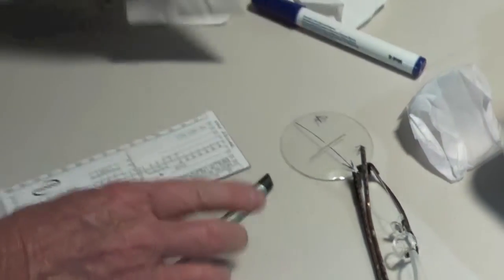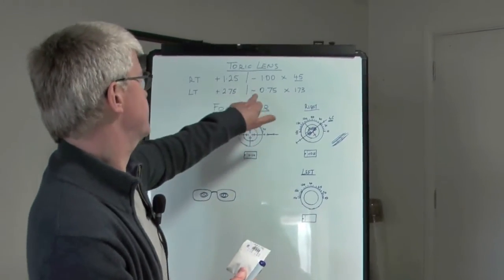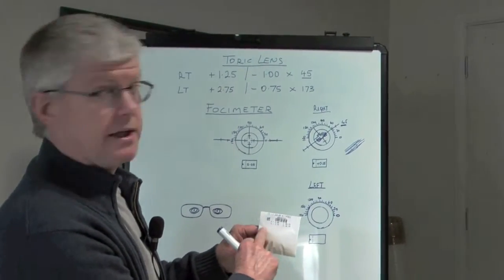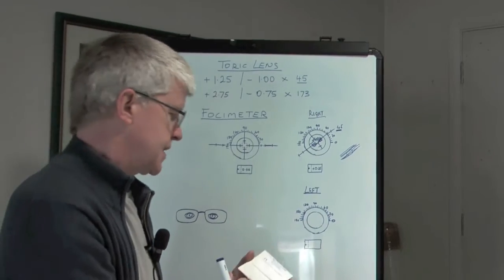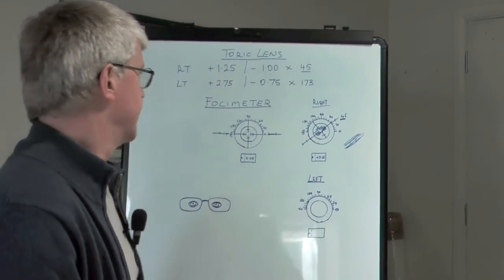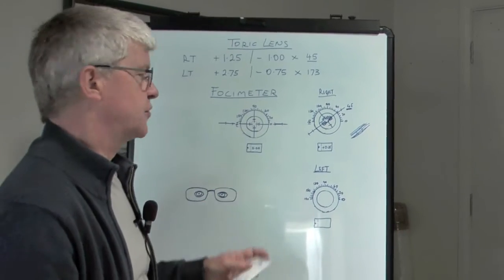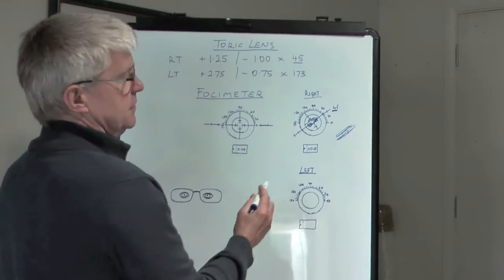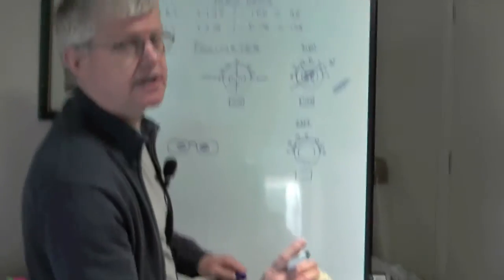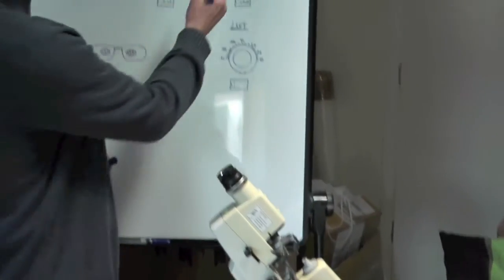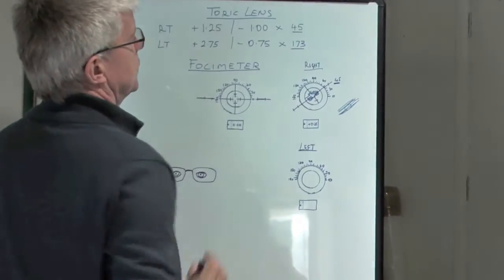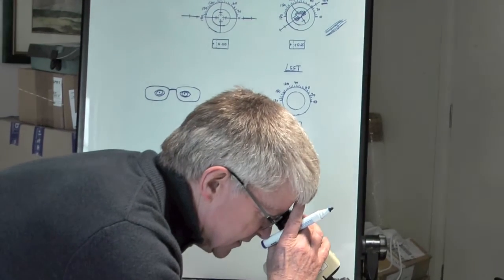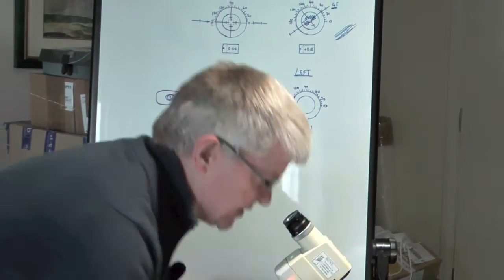Now we're going to do the left lens. We've got plus 2.75 minus 0.75, which is what we've got on the lens packet here. We're going to do exactly the same thing again. First of all, we set the axis using this dial here. We want an axis of 173. So I'm going to set the axis now at 173.